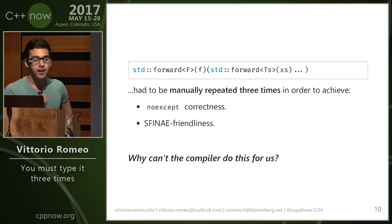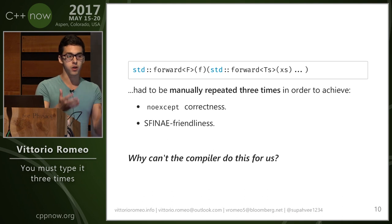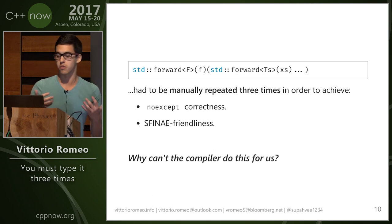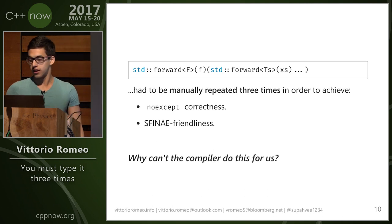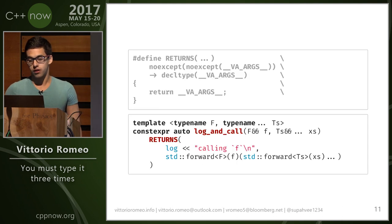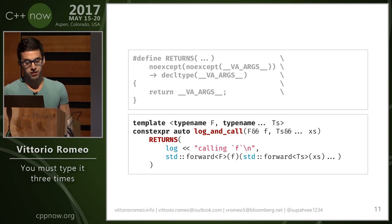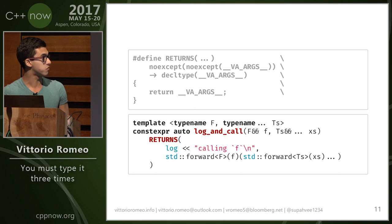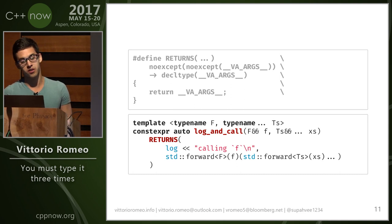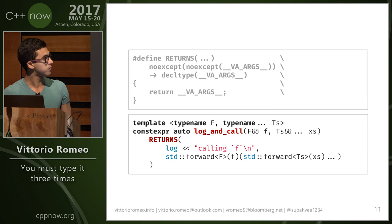And why cannot the compiler do that for us? It has the body. It knows what we want to do. Since the compiler cannot do it for us, what we do is use a macro. This is the RETURNS macro that basically takes a bunch of tokens and expands the same tokens into the noexcept, the decltype, and the return.